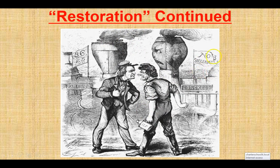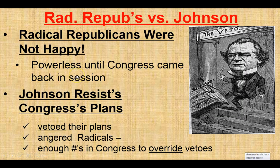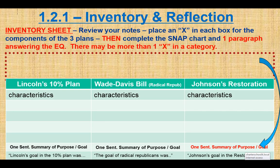Here are the Radical Republicans on the Congress side saying no surrender, and here is Andrew Johnson as president saying: do you want 36 states again, or do you want to keep it at 25? We need to have all 36 on my train. The Radical Republicans are not happy, and they're basically powerless until Congress comes back into session. When they do, they'll have their own plans, and Johnson is going to resist those plans, veto them, and anger the Radical Republicans enough that more of them will be voted into office and start overriding those vetoes.